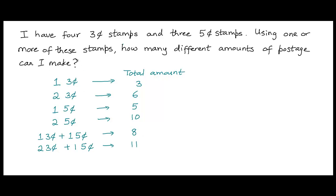Or I could use all the stamps given. I'm given four three-cent stamps and three five-cent stamps, so if I used all of them, the total amount of postage would be four times three, which is twelve, plus three times five, which is fifteen — twenty-seven cents.